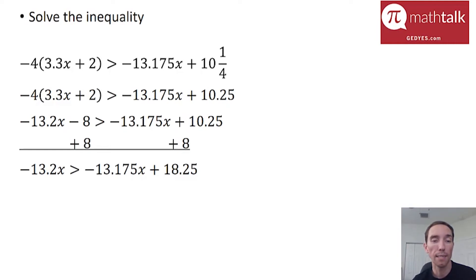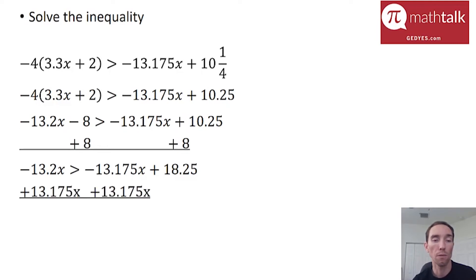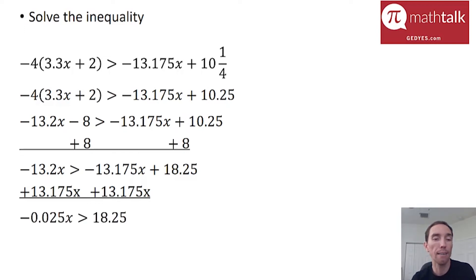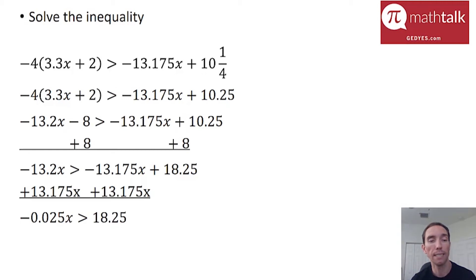Since my numbers are on the right, I need to put my x's all the way to the left. I'll add 13.175x to both sides. I highly recommend using a calculator to add negative 13.2 plus 13.175. When you do that, you get negative 0.025x is greater than 18.25, and the 13.175x terms go away. Now I have one more step: divide both sides by negative 0.025. Again, I recommend using a calculator because that's a pretty ugly decimal.